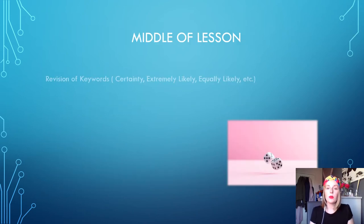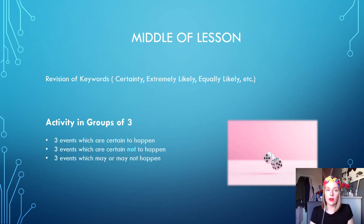I would then move on and briefly revise the keywords used in probability: certainly, extremely likely, equally, etc. At this point I would split the class into groups of three and ask each group to write down three events which are certain to happen, three events which are certain not to happen, and three events which may or may not happen. While they are completing this task I would walk around the room and try and assist individuals where possible, asking further questions to try and guide them to the correct answers. Once the task is complete I would ask for suggestions from the group and make a list of such on the board.